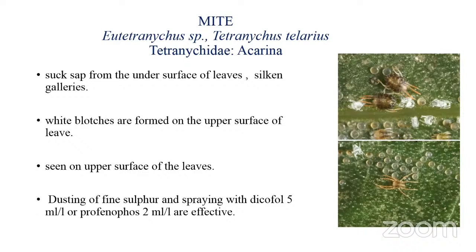The next pest is the mite, Eutetranychus species or Tetranychus telarius, belonging to family Tetranychidae and order Acarina. Nymphs and adults suck sap from the under surface of the leaves by constructing silken galleries. During severe infestation, white blotches are formed on the upper surface of the leaves. In severe attack, mites are also seen on the upper surface.